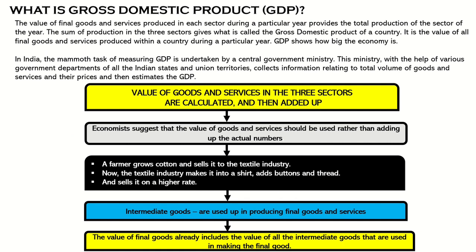Now, what exactly is Gross Domestic Product? The value of final goods and services produced in each sector during a particular year provides the total production of that sector for the year. The sum of production in the three sectors gives what is called the Gross Domestic Product of a country. It is the value of all final goods and services produced within a country during a particular year.